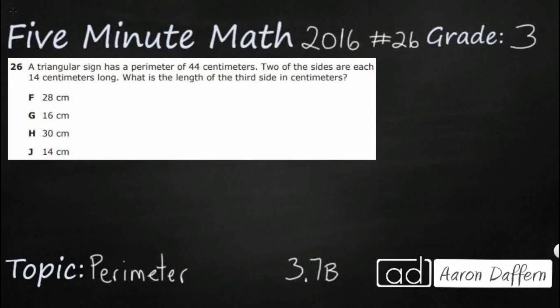Hello and welcome to 5-Minute Math. Today we are looking at the third grade concept of perimeter and this is standard 3.7b in the great state of Texas. We are using item number 26 off the 2016 released STAAR test.